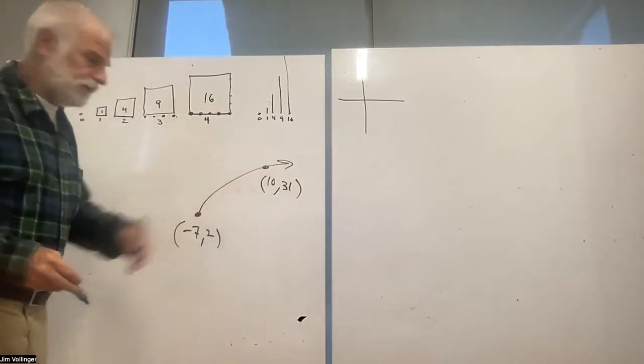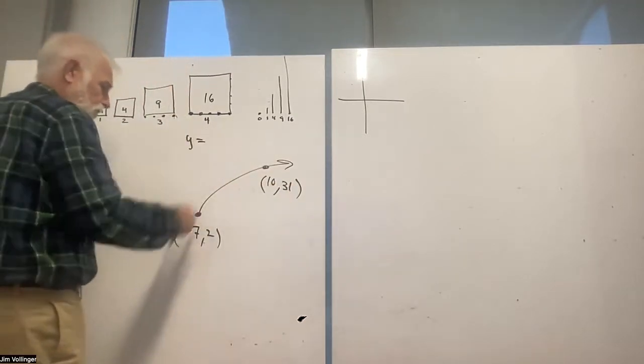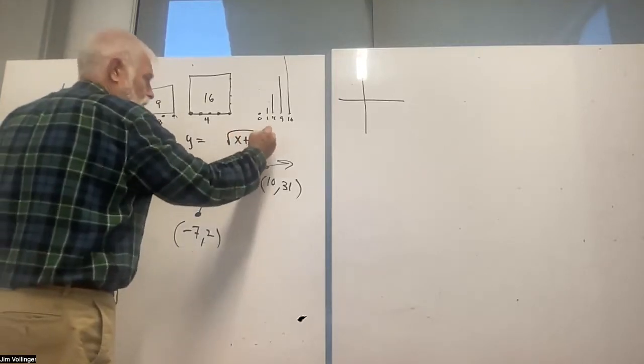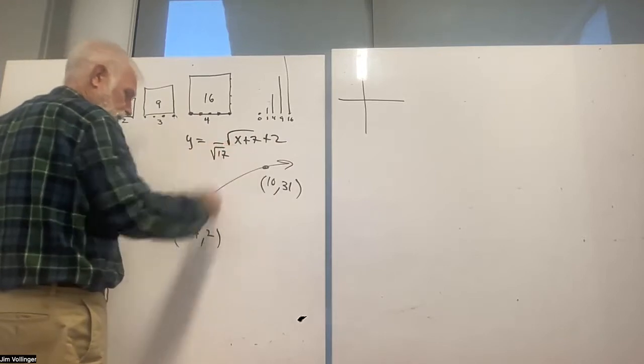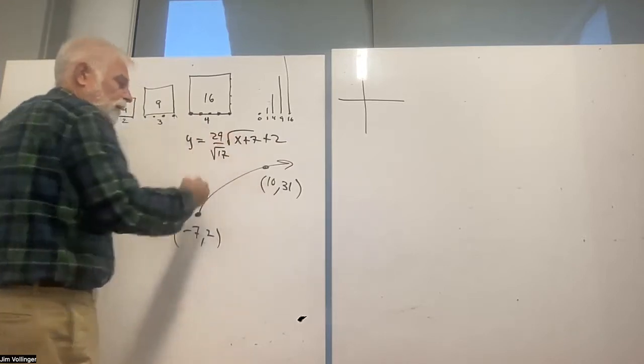All right, so I'm just going to write this equation now. So y equals, so we'll start with x plus 7, 1, 2, change, operational change, square root of 17, 2 to 31 is 29. That's that equation.